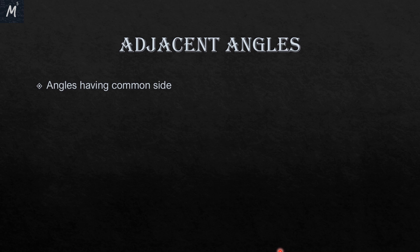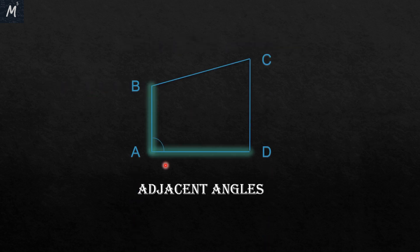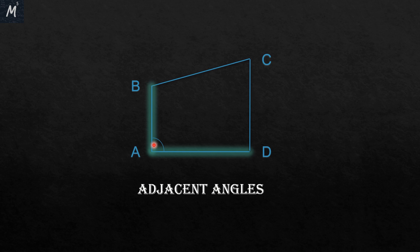The next topic is adjacent angles. Adjacent angles are the ones which have a common side. In quadrilateral ABCD, to find the angles adjacent to angle A, we look at its two arms: AB and AD. AB is also part of angle B, and AD is also part of angle D. Therefore, angle A and angle B are adjacent angles, and angle A and angle D are also adjacent angles. So B and D are the adjacent angles for angle A.